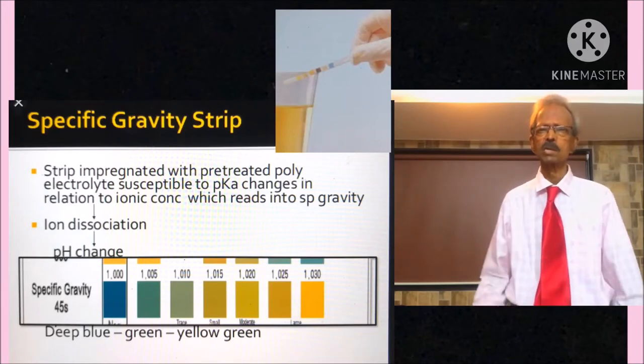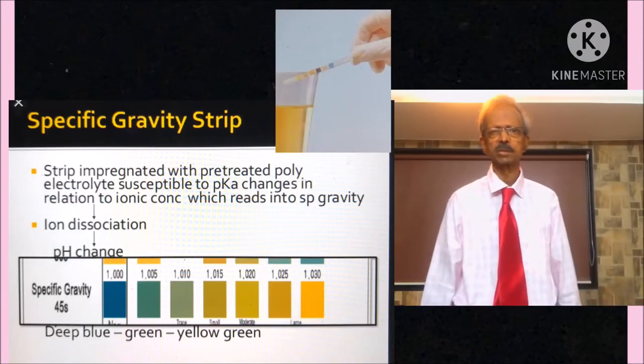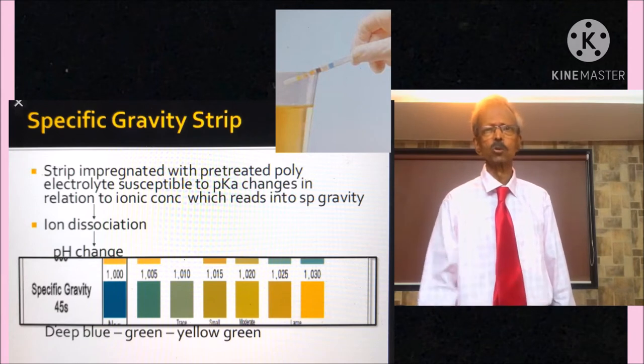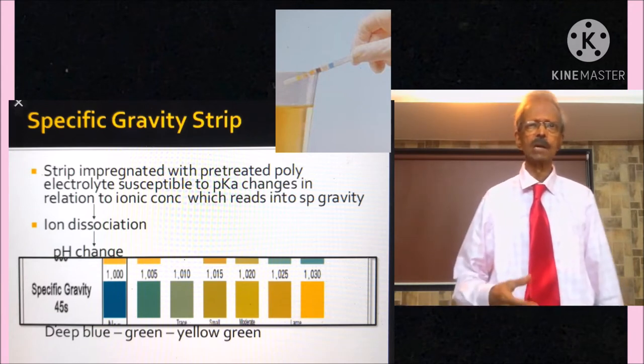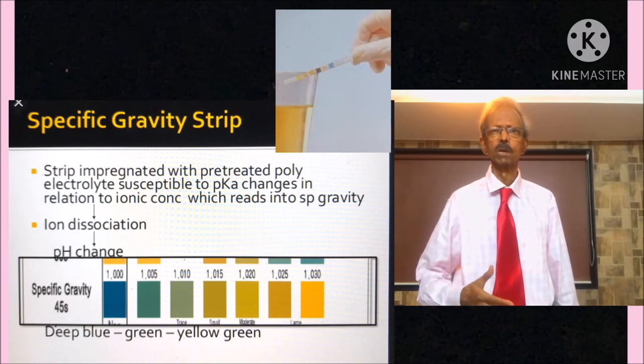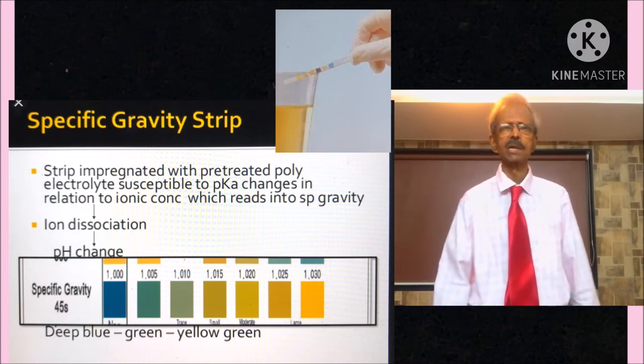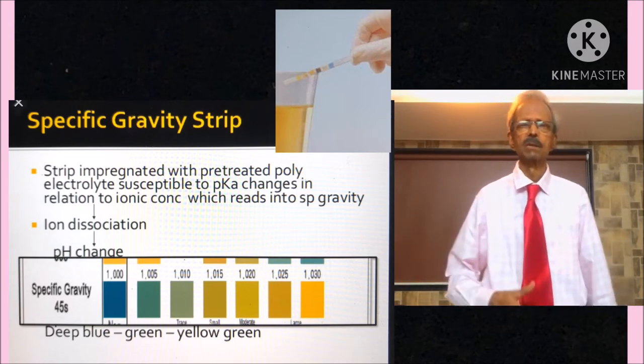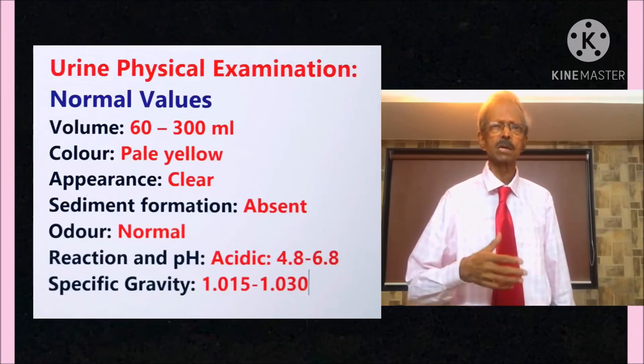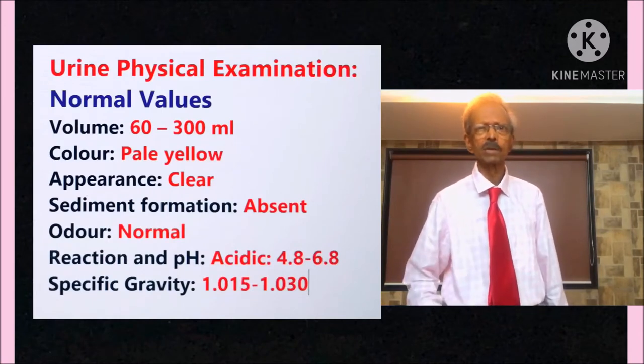You can also determine specific gravity of urine by using a urine strip. Just dip urine strip for few seconds in urine, take out and read specific gravity as shown on the left-hand side. Now, I will give you information of clinical significance of urine.